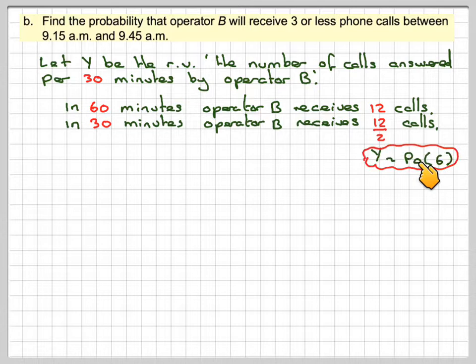Therefore Y will be Poisson distributed with mean 6. We want the probability that Y is less than or equal to 3.